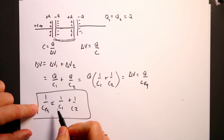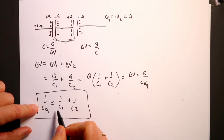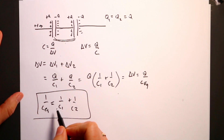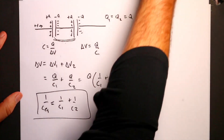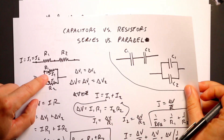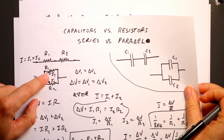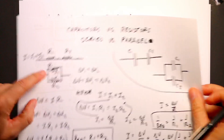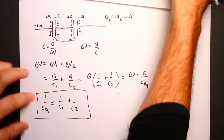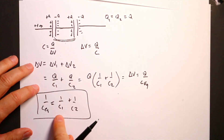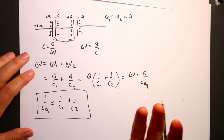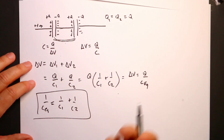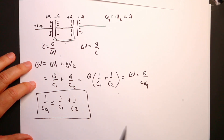Capacitors in series look just like the equation for resistors in parallel. Why is this flipped? It's because resistors in parallel have the same voltage but different currents, while capacitors in series do not have the same voltage — they have the same charge. And the current is the derivative of the charge, so that's really why they're flipped.